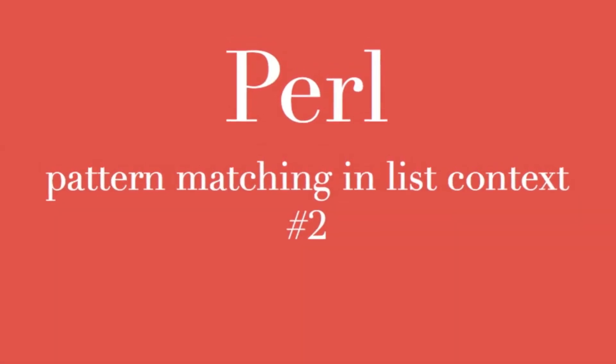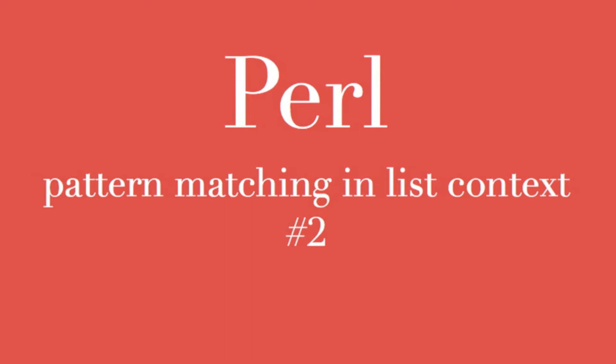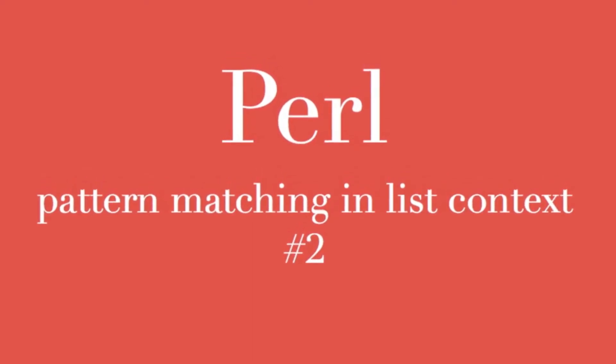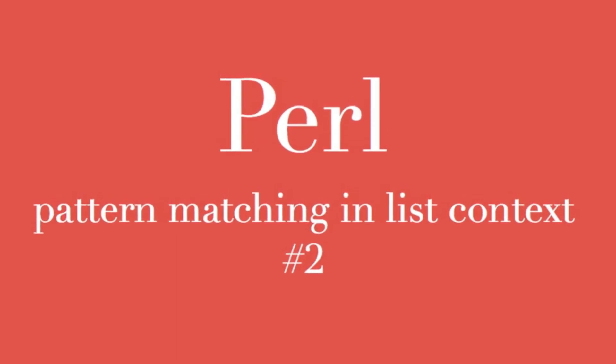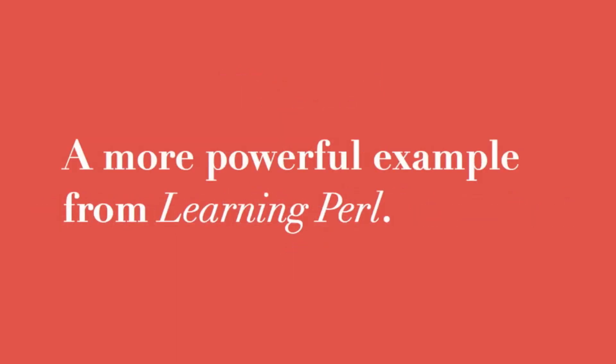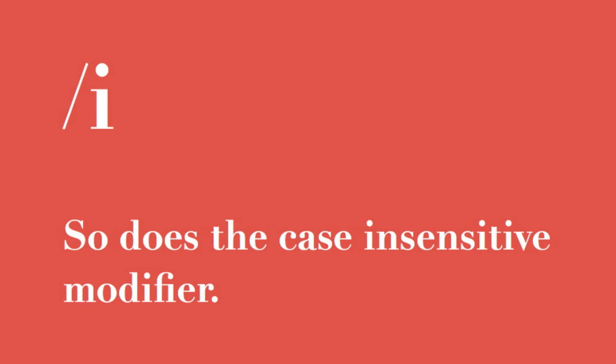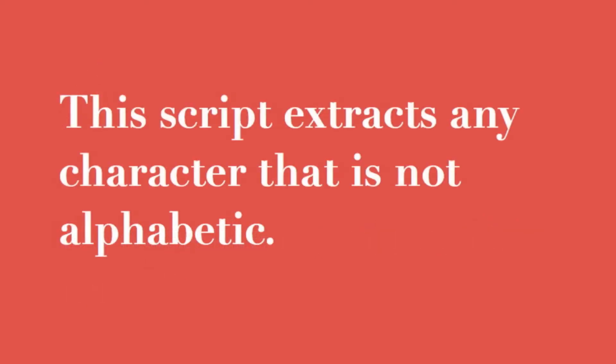In this episode of Perl, we're going to combine pattern matching in list context with the global and case insensitive modifiers. We'll demonstrate by stepping through an example from Randall Schwartz's outstanding book Learning Perl. This example combines the power of the global modifier with the case insensitive modifier, and the objective of our script is to extract any character that is not alphabetic.